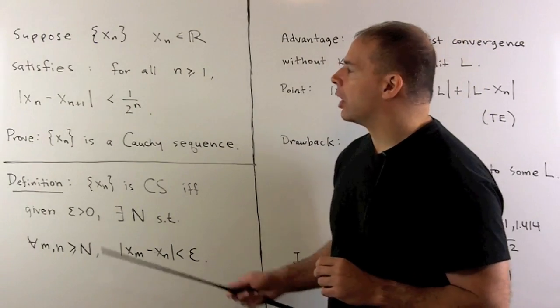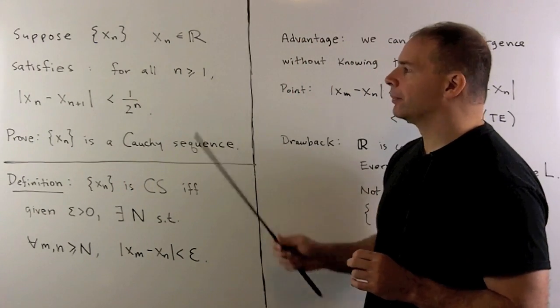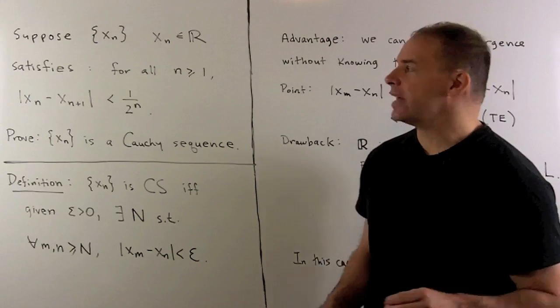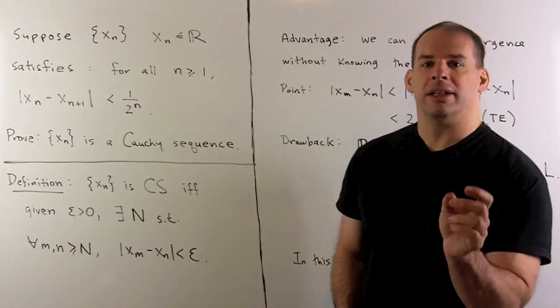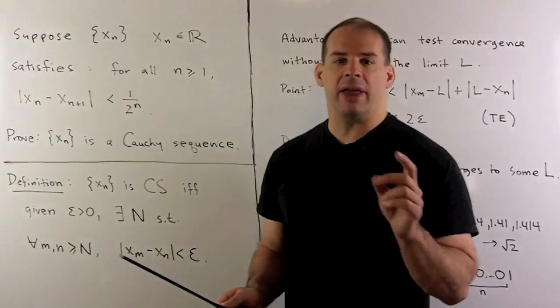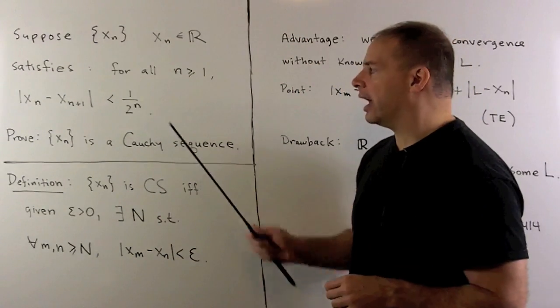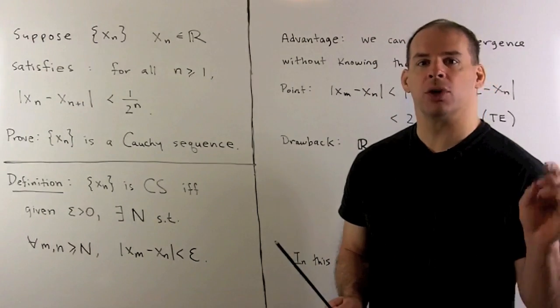The problem: Suppose we have a sequence of real numbers x_n. The sequence satisfies for all n ≥ 1, if we take the distance between any two consecutive x's, we'll bound that by 1/2^n. We want to prove that x_n is a Cauchy sequence.